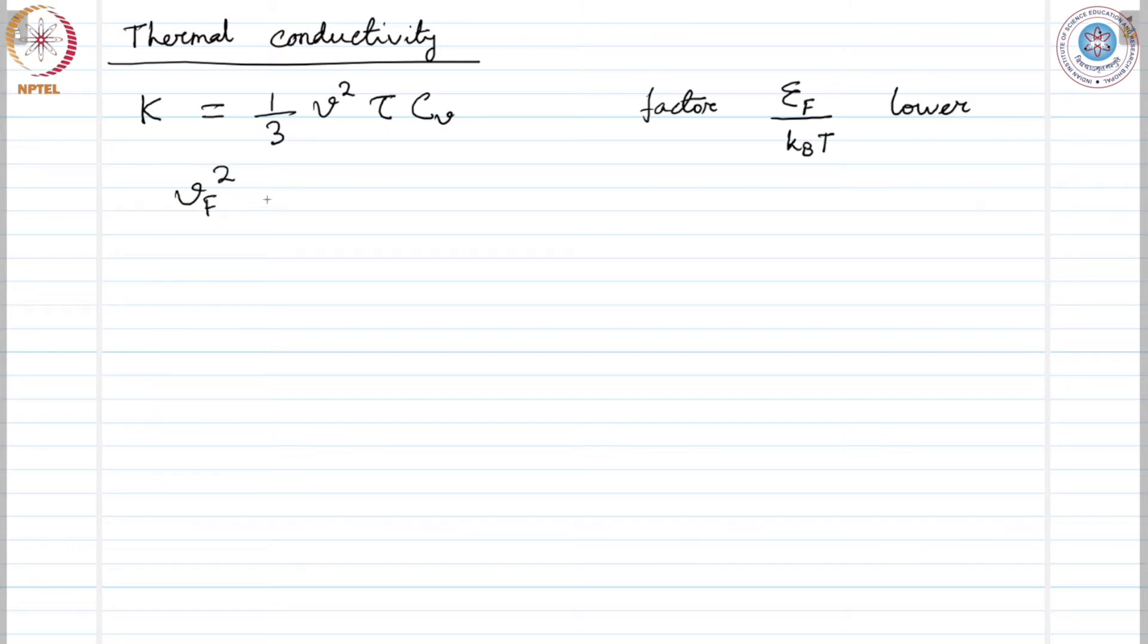We can write Vf squared equals twice epsilon f over the mass. This comes from the expression of kinetic energy where Fermi energy is the electronic kinetic energy. We are considering free electrons and this is the Fermi velocity.